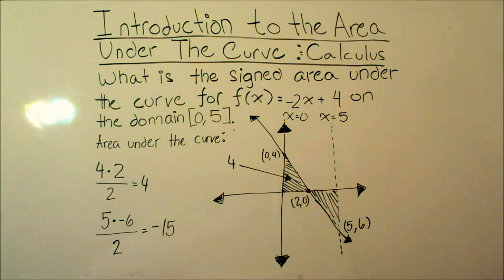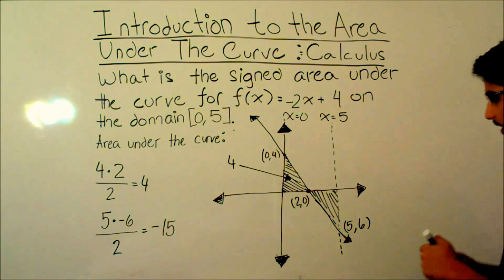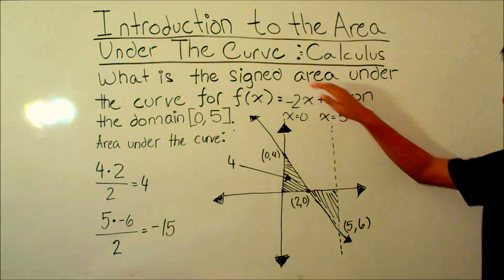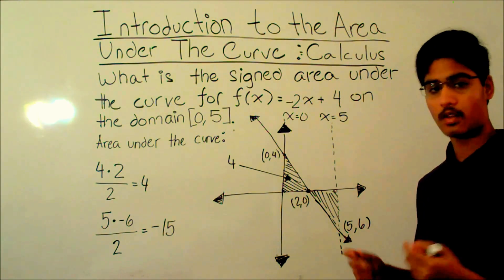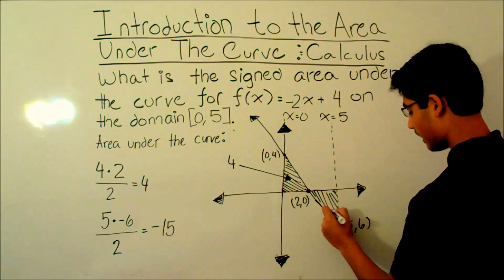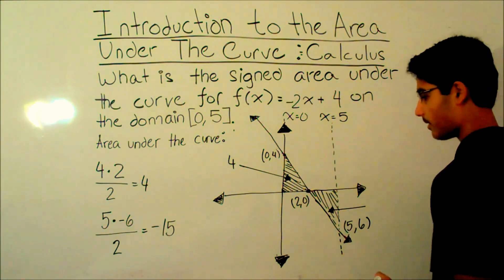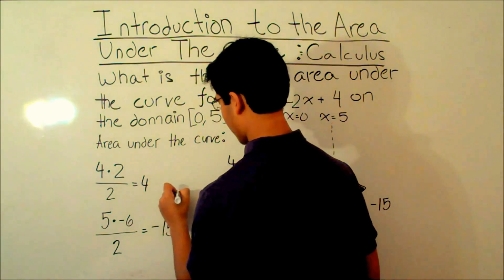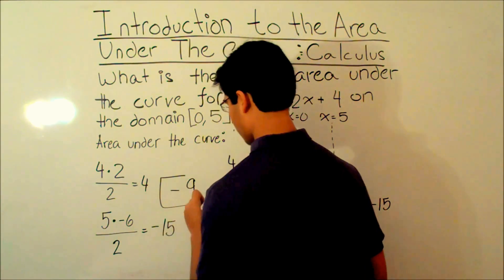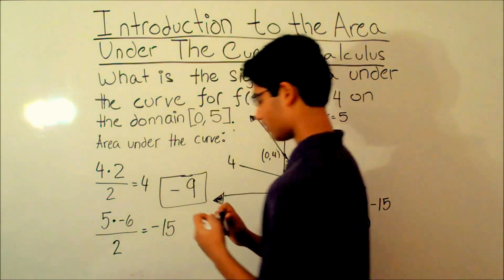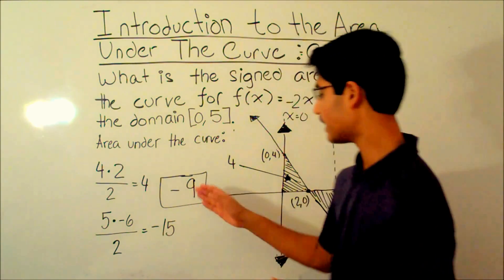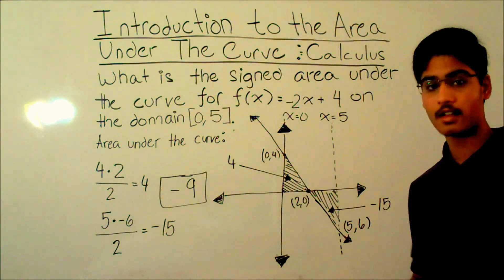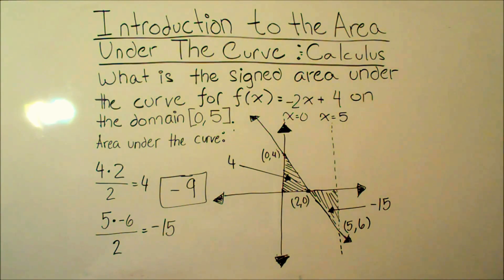The area above the curve is a negative area because of the signed area rule. Adding the two areas together: -15 + 4 = -9. So the answer to this problem is negative 9. Today we learned about the signed area and the area under the curve in the video Introduction to the Area Under the Curve in Calculus.